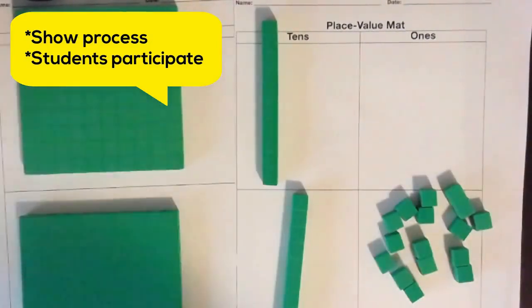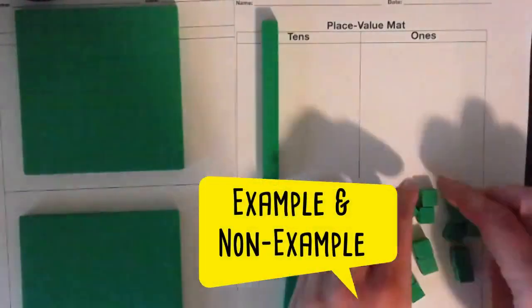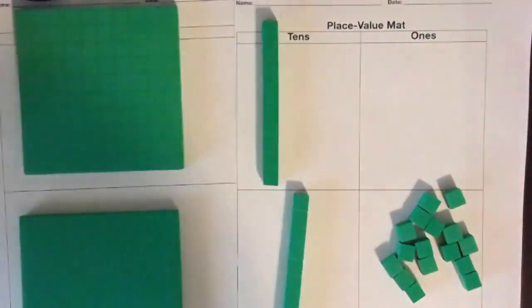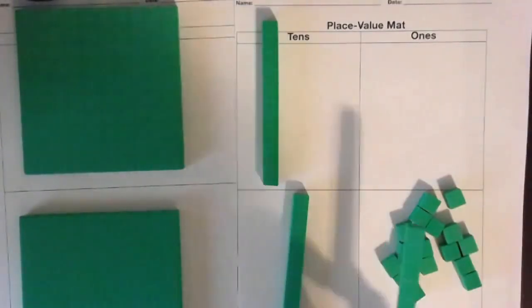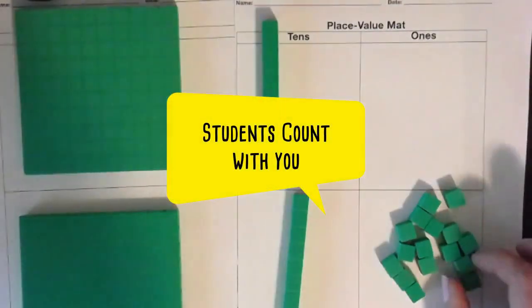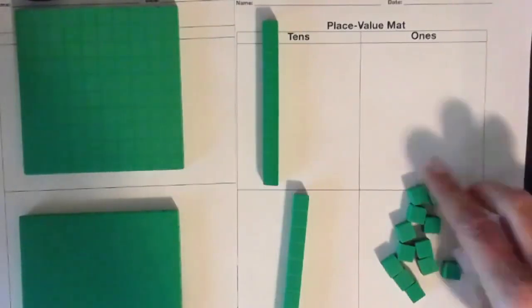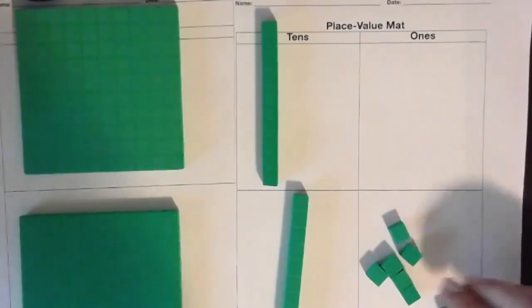We have 16 in the ones. Can we keep 16 here in the ones? No, we can't keep it here because this is the ones column. We need to regroup — we need to go next door. We're going to exchange 10 ones for a ten. Count with me as I separate 10: 2, 4, 6, 8, 10.